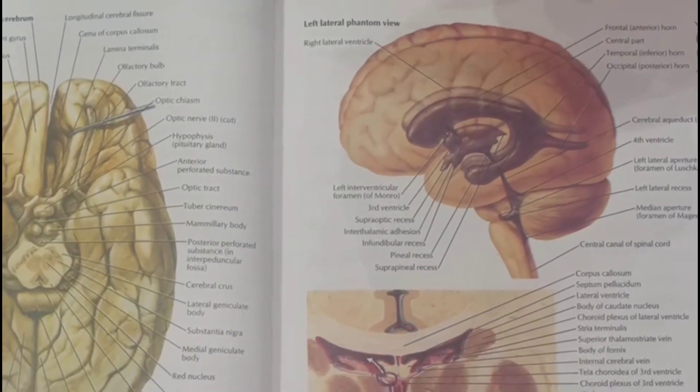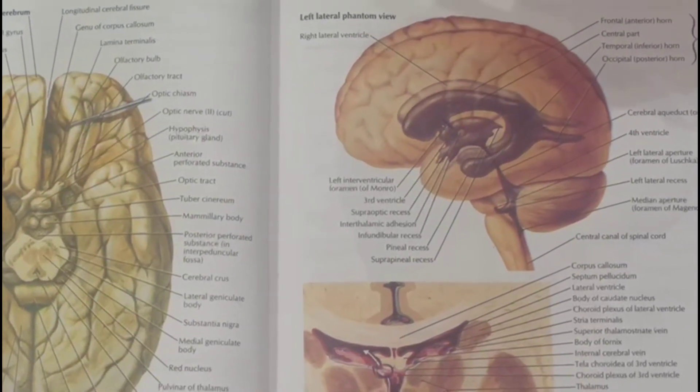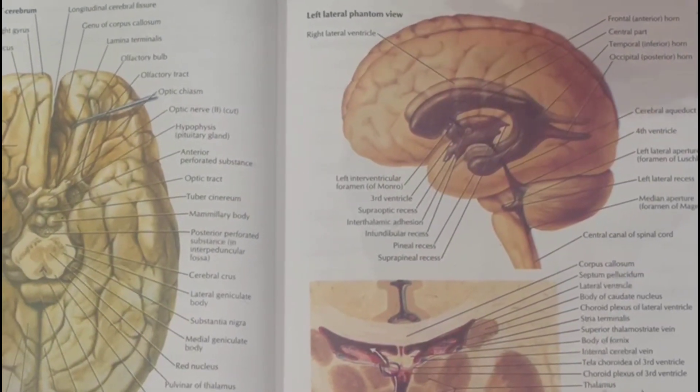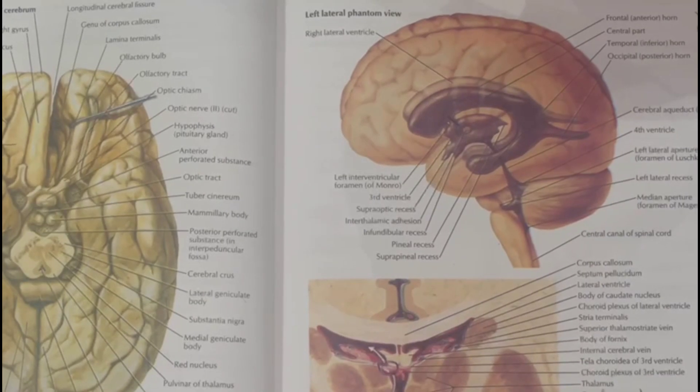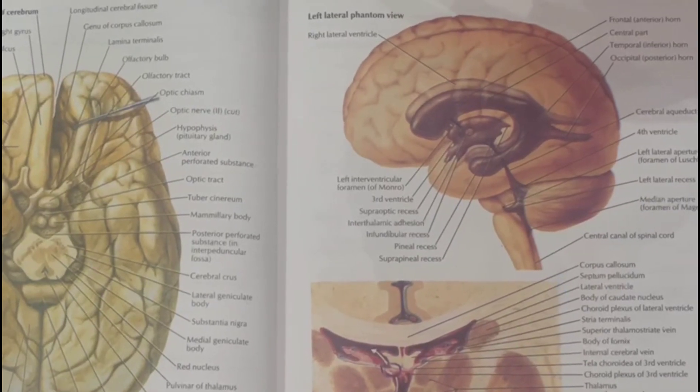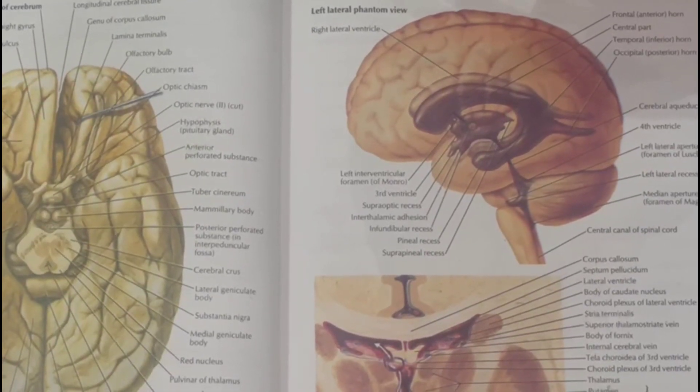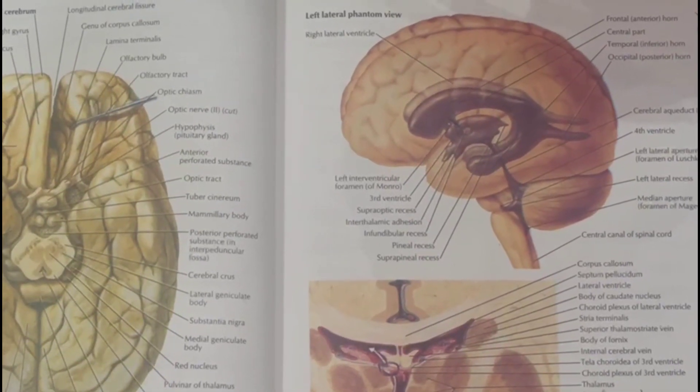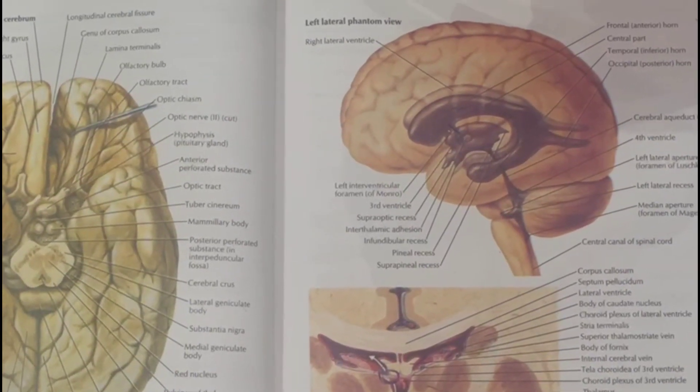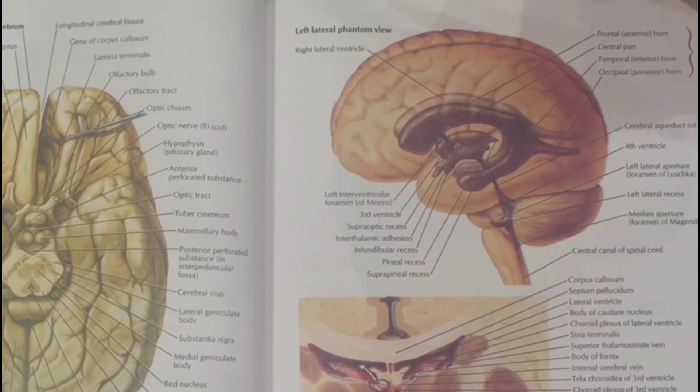In this video, we are going to study the details of the third ventricle. The third ventricle basically has an anterior wall, a posterior wall, a superior wall, an inferior wall, and a lateral wall.